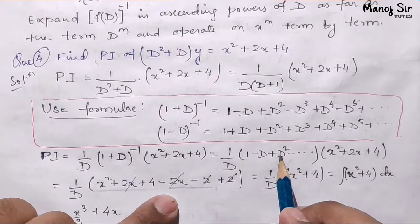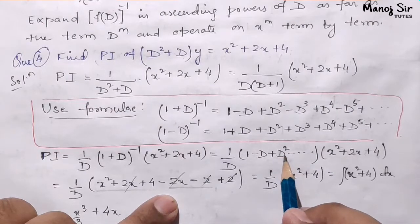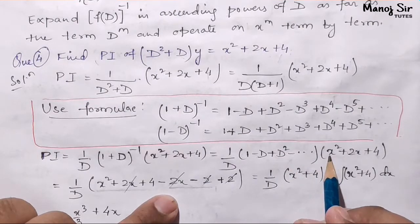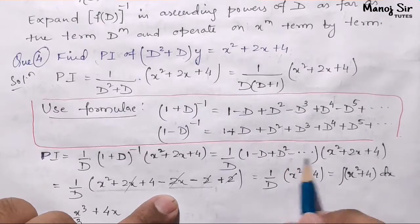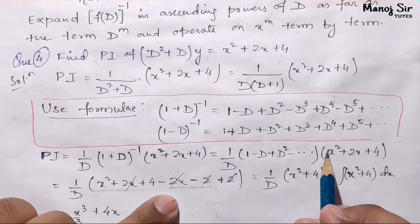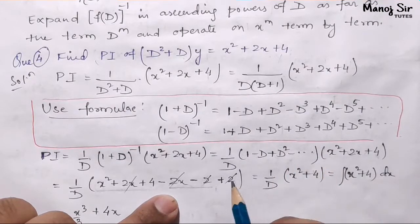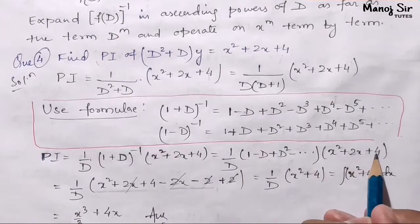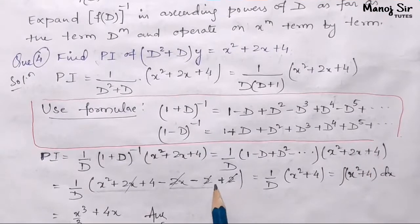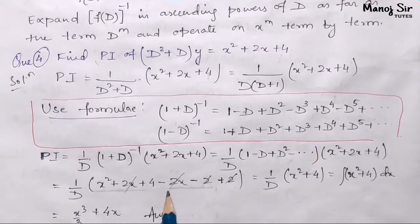Now the D² part — D² means double differentiation. Differentiating x² once gives 2x, and differentiating again gives 2. Since it is positive, we get plus 2. Now cancellations: +2 and -2 cancel, and +2x and -2x cancel, leaving us with x² + 4. So we have 1 upon D times (x² + 4).